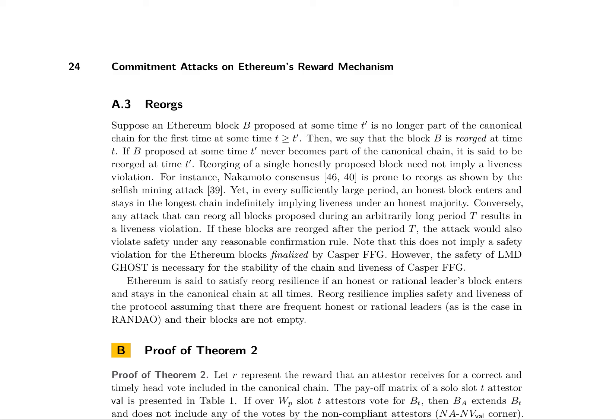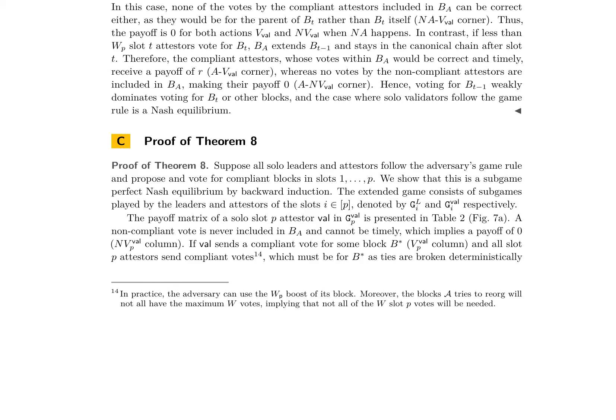Timely and correct votes are essential in the Ethereum network's consensus mechanism, focusing on head votes and their timeliness. Slashing rules aim to enforce accountable safety by removing validators that violate protocol rules. The concept of reorgs is introduced, where a block being reorg'd does not necessarily imply a liveness violation. Proof-of-theorems demonstrate how the game-theoretic framework ensures that solo validators follow the game rule, making the system a Nash equilibrium.